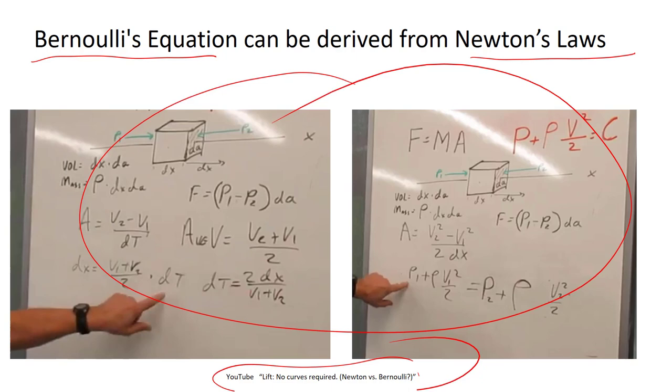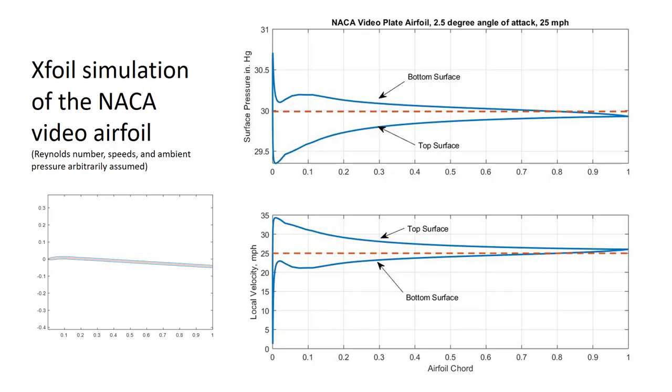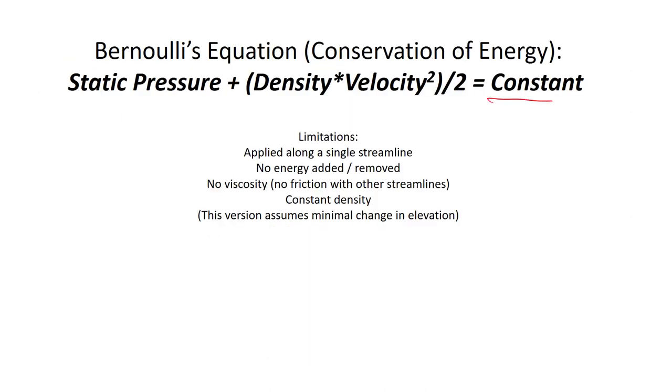So what is Bernoulli's law useful for? Well, one thing is you can use it to compare velocities and pressures. You can convert back and forth between velocity and pressure. If we go back to our equation, if we know that the sum of the potential energy from pressure and the kinetic energy from the velocity are constant, as we increase one, we decrease the other. That's what it's telling us.